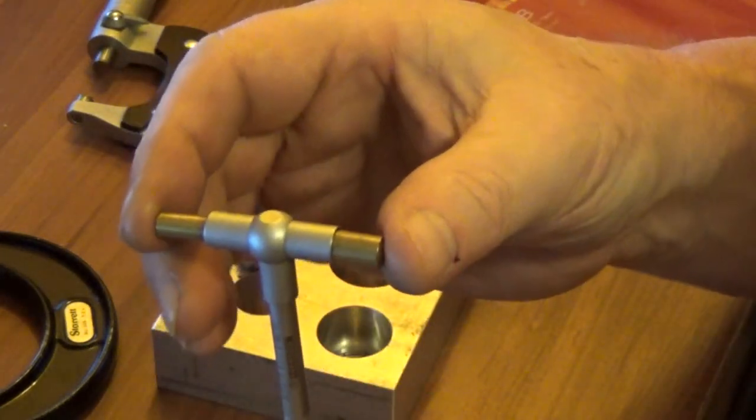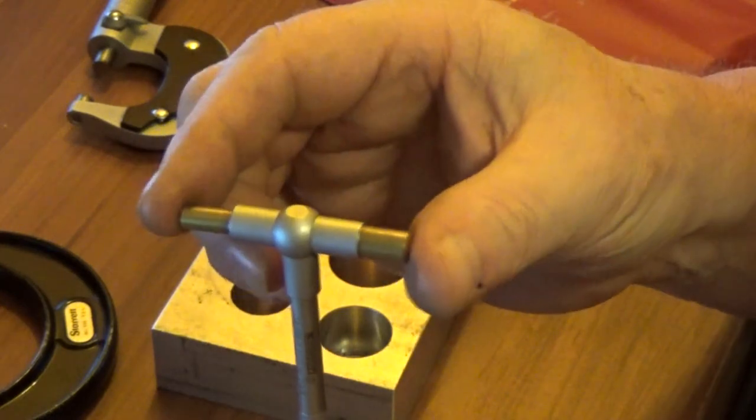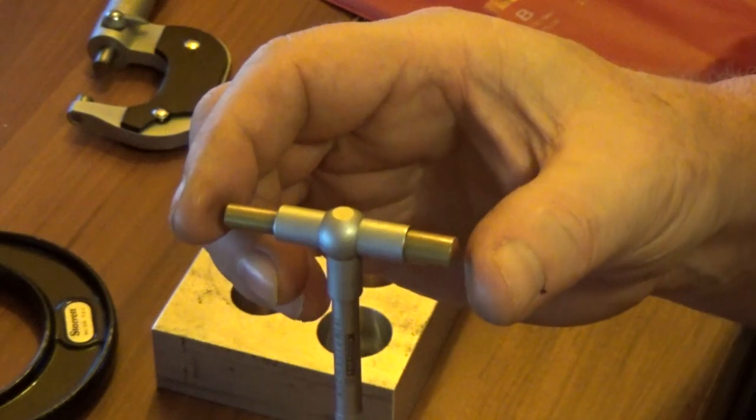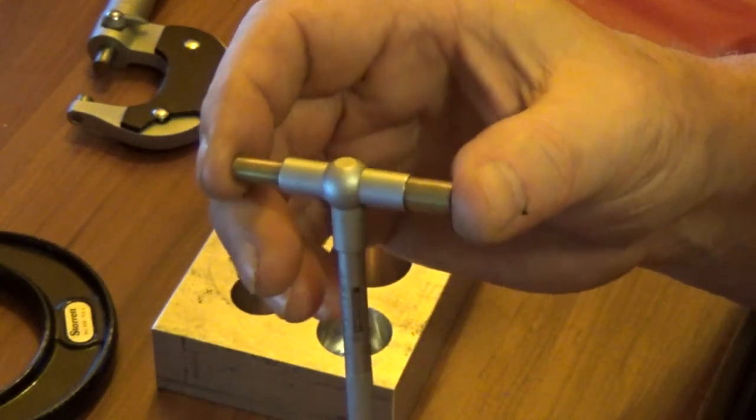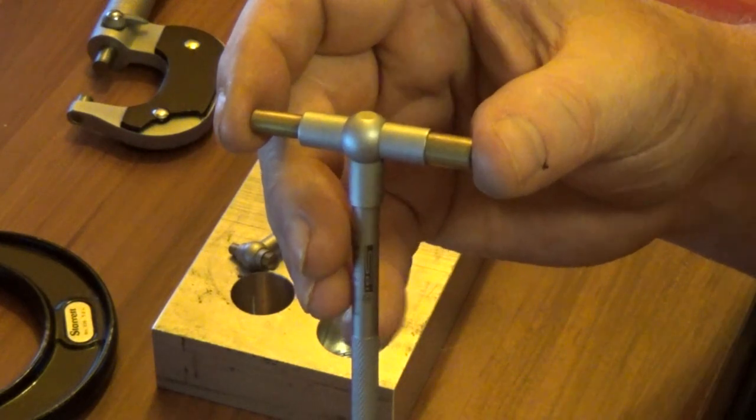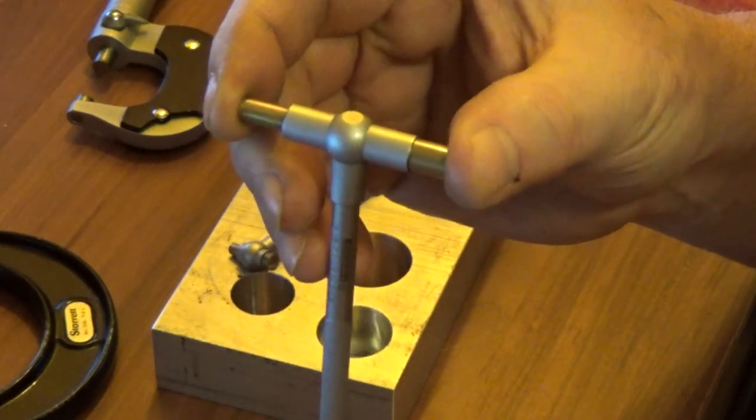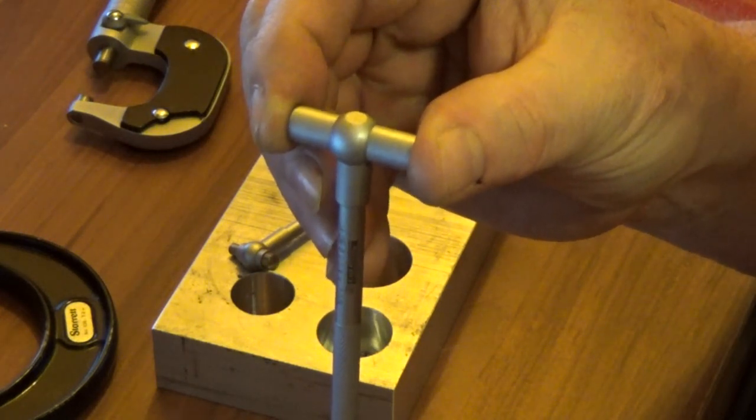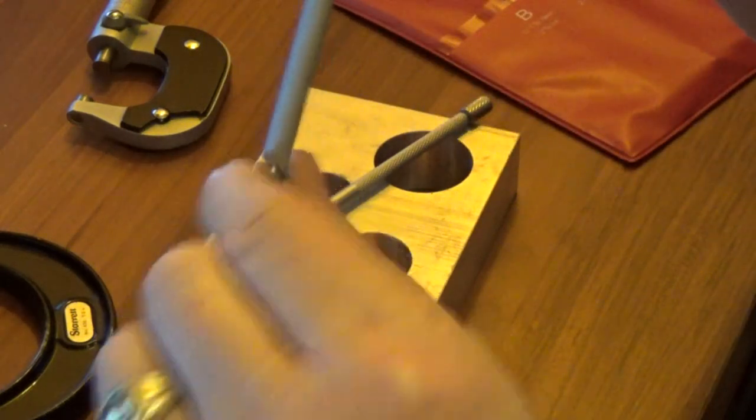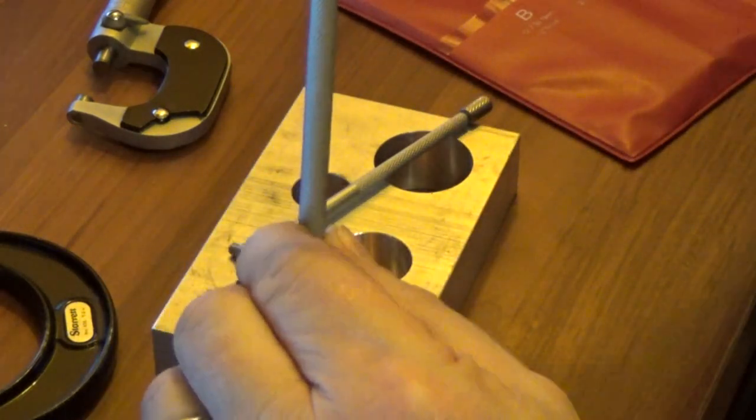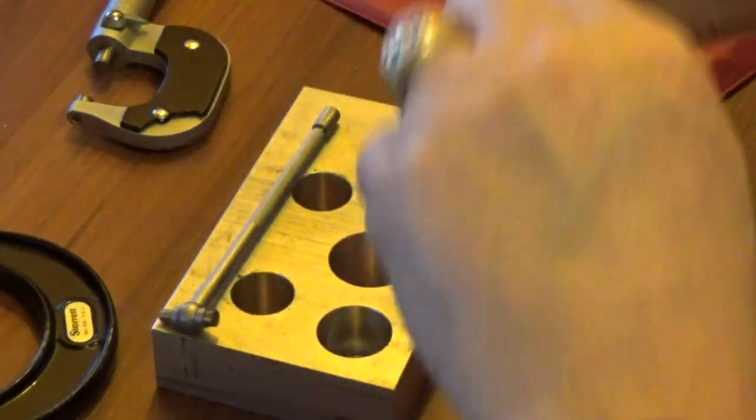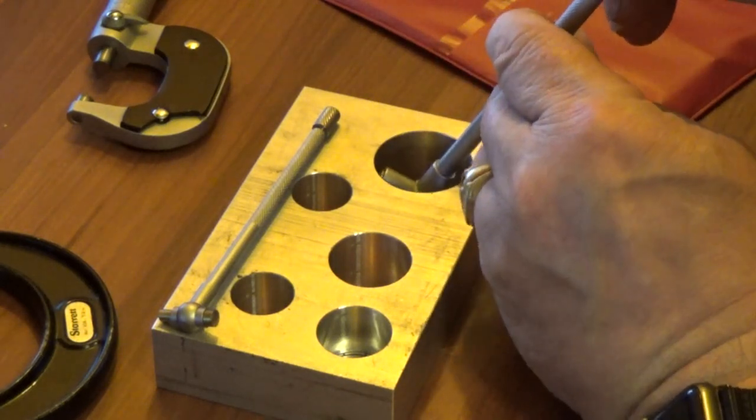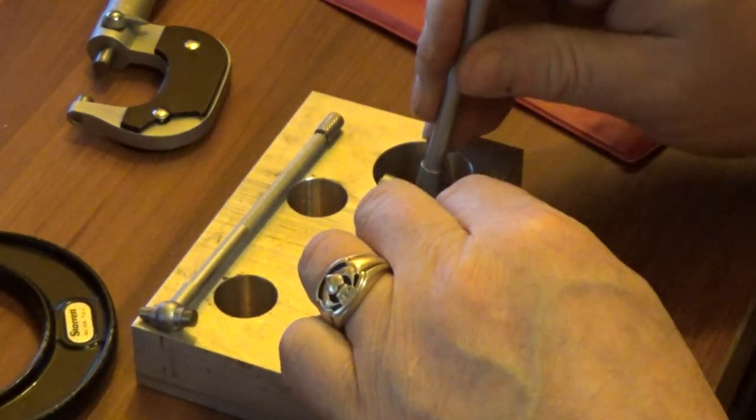They're called telescoping gauges because these plungers telescope. These plungers are spring-loaded. They are very fragile instruments, so you want to be very careful. What you want to do is, when it's loose, push those down to the smallest size and then tighten this thumb screw at the bottom until it doesn't move. Then what I like to do is put it in the hole, loosen it, and then move it back and forth.